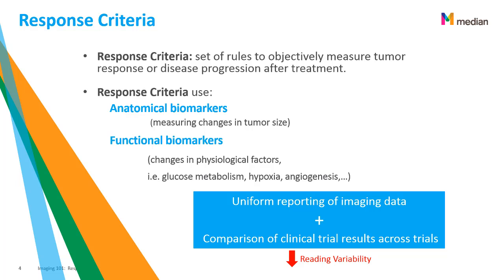These modalities will give us information on glucose metabolism, hypoxia, and angiogenesis, for example. Response criteria are used to allow for uniform reporting of imaging data. They are used so that different clinical sites, centers, readers, and countries can measure and report tumors the same way by providing standardized information. The measures can then be analyzed and used uniformly to understand the efficacy of the treatment and to compare results across trials.